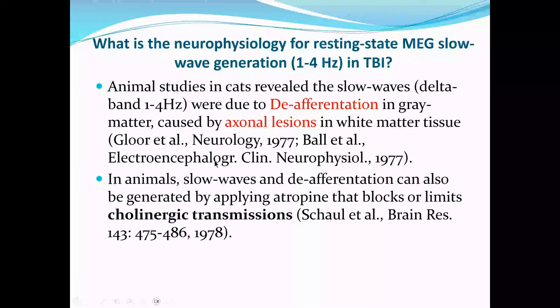They published a couple of papers in 1977 — Gloor, Ball, and Schaul. The first thing they did was generate physical damage in animals (cats), with more invasive recording: they opened the skull and placed an electrical grid on the cortex. When they generated physical damage to the axon, the electrocorticography over the gray matter overlying the injury area showed this abnormal downward wave at 1 to 4 Hz. The conclusion was that there's a de-afferentation because of physical damage to the axonal pathway leading to the generation of the abnormal slow wave.